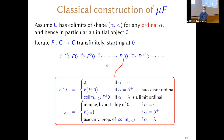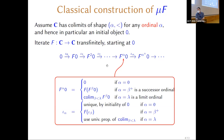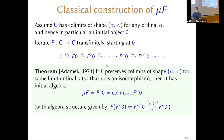Suppose we're in a category with co-limits of ordinal chains. Start with the initial object and apply F, then apply F again, and so on. At a successor ordinal just apply the functor; at a limit ordinal take the co-limit of the diagram already constructed. Adámek's theorem says that if that process becomes stationary up to isomorphism at some limit ordinal λ, then that's going to be an initial algebra for the functor.